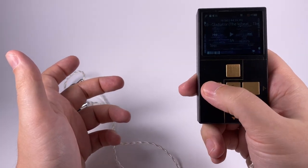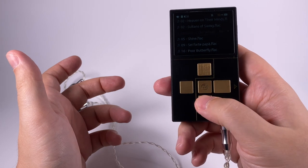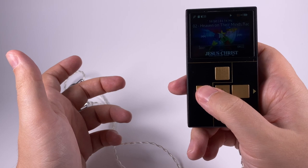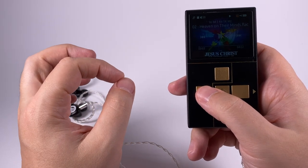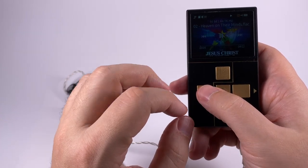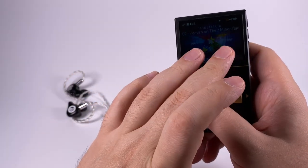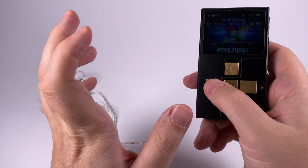The first example of treble is 'Heaven on Their Minds' from the Jesus Christ Superstar - great vocal performance and good accompaniment. All those things go high to the treble area and this player controls that and delivers really great.